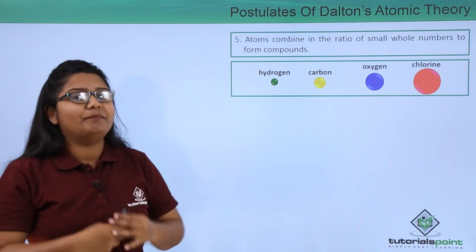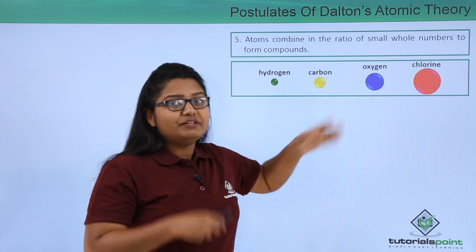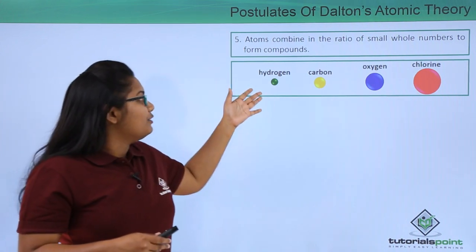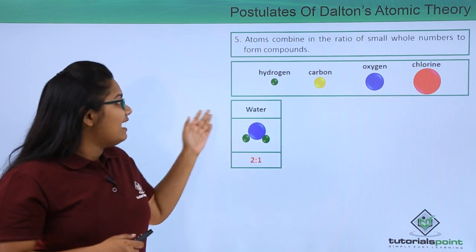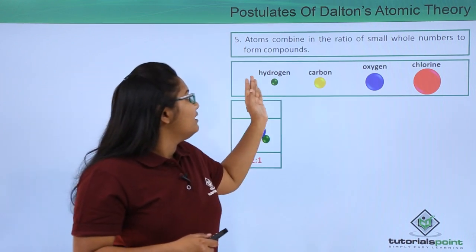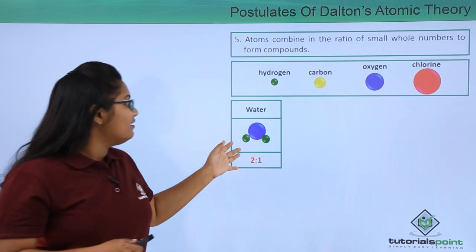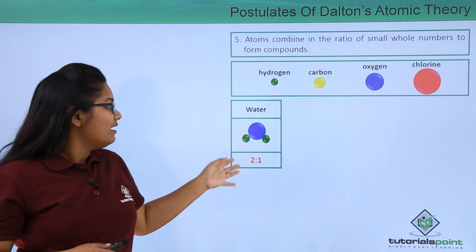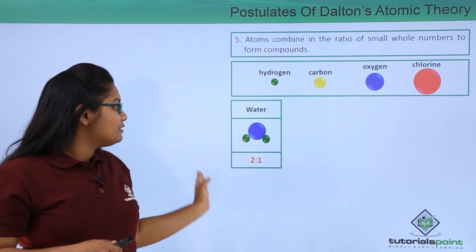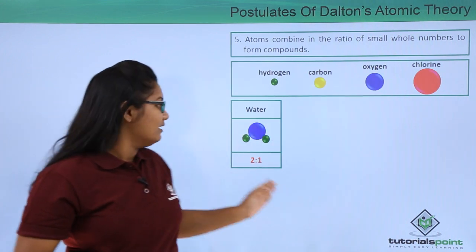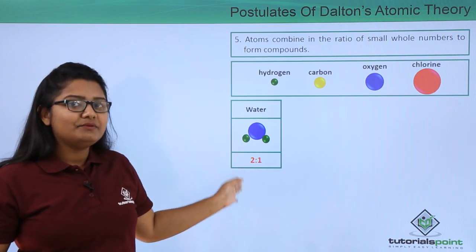For example, taking four atoms of different elements — hydrogen, carbon, oxygen and chlorine — when these atoms combine: two hydrogen atoms combine with one oxygen atom to yield a molecule of water. The ratio of hydrogen atoms to oxygen atoms is two to one, which is a simple whole number ratio. Similarly, a carbon atom combines with two oxygen atoms to give carbon dioxide, where the ratio of carbon to oxygen atoms is one to two — again a simple whole number ratio.